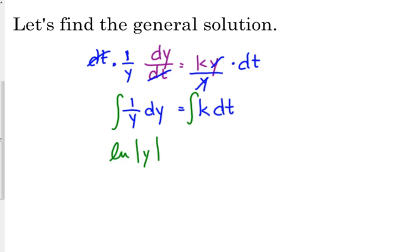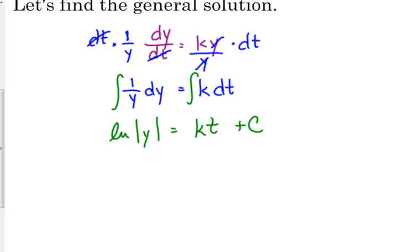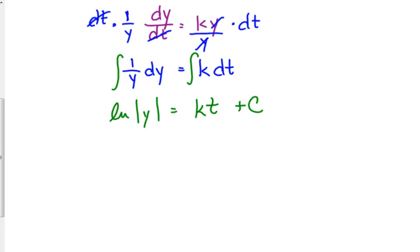Because we don't know anything about y, technically we need to put absolute value bars around it, just in case it's negative. Now k is a constant. So the anti-derivative of k with respect to t would be k times t plus c. Now we need to solve for y. Right now y is inside of a natural log. So how do we get something out of a natural log? We need to write it in exponential form. The base of the natural log is e. So in exponential form, that says e to the kt plus c is equal to y. Now I can drop the absolute value bars here because e to a power is always positive. Unless there's something else in front of it, and there's not in this case. But e raised to a power is only positive. So I can drop those absolute value bars.